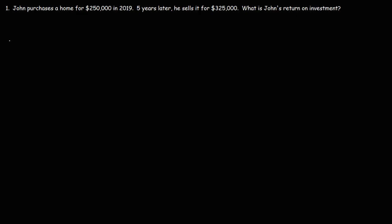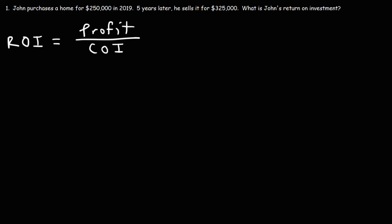To calculate the ROI, or the return on investment, it's equal to the profit divided by the cost of the investment. And the profit is equal to the current value of the investment minus the cost of the investment. So the profit P is equal to the current value minus the cost of the investment.